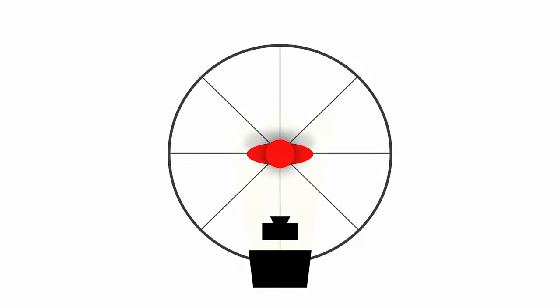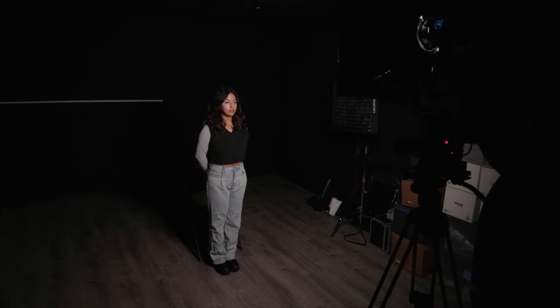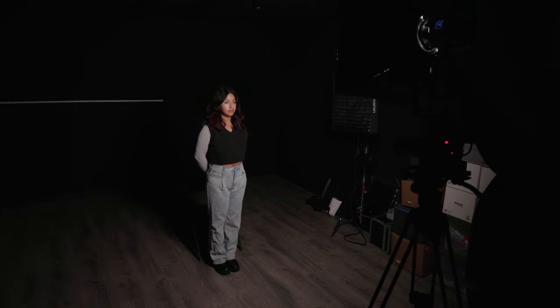Let's start with a totally frontal light. In this instance, our light is directly behind our camera, about three feet up, pointed 45 degrees down. We're pointing at 45 degrees down to make sure the eyes are evenly lit.